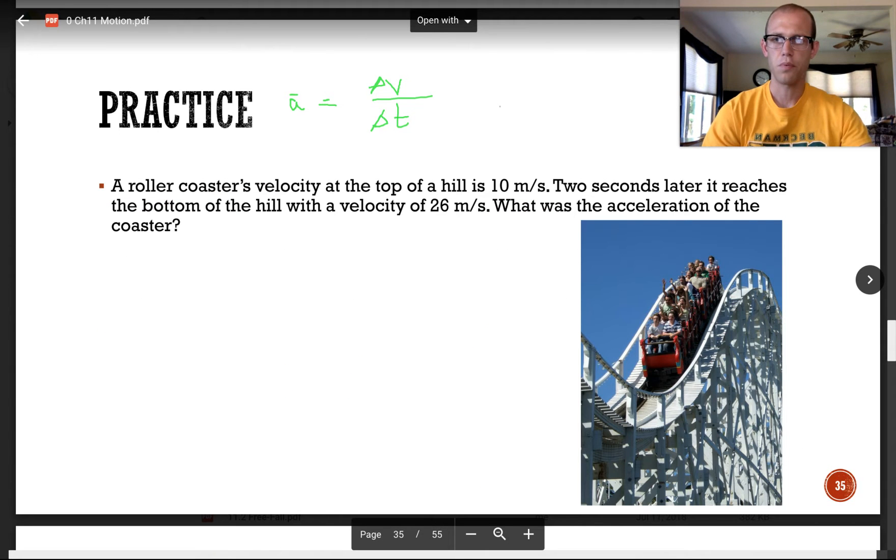Another practice problem. A roller coaster's velocity at the top of the hill is 10 meters per second. Two seconds later, it reaches the bottom of the hill with a velocity of 26 meters per second. What was the acceleration of the coaster? So remember, acceleration, average acceleration, is calculated by a change in velocity over change in time.